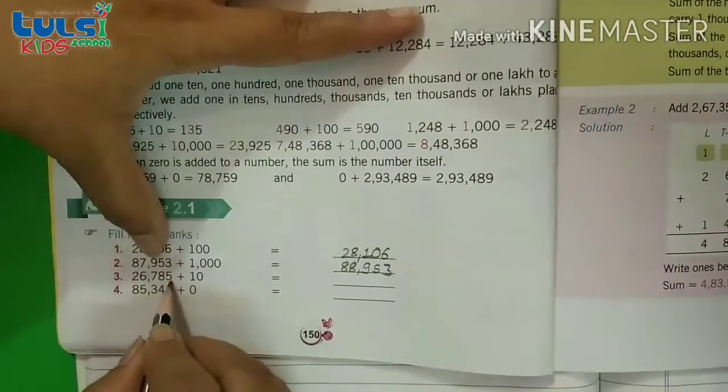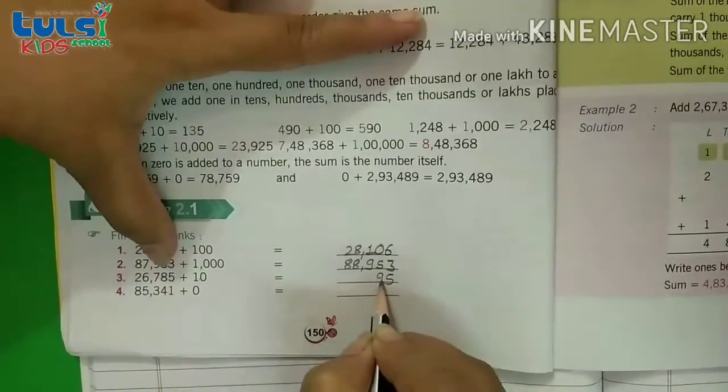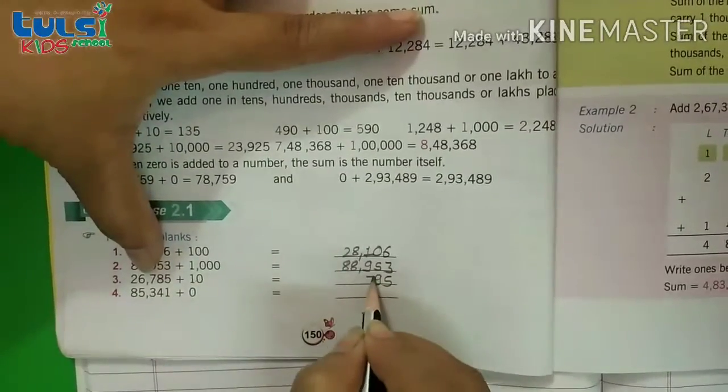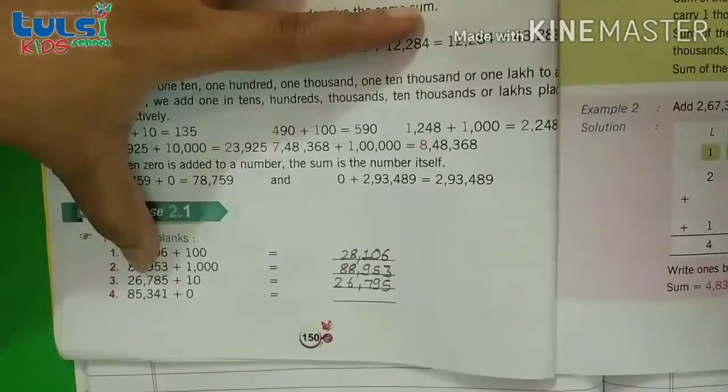Now 26785 plus 10. So 5 plus 0 is 5, 8 plus 1 is 9. Then 7 remaining as is usual. Then 6, then 2. 26795 is the answer.